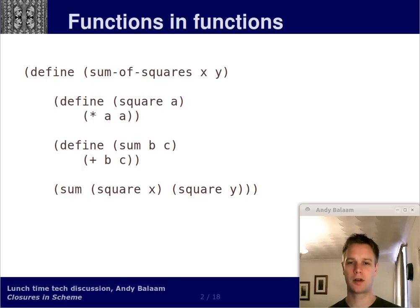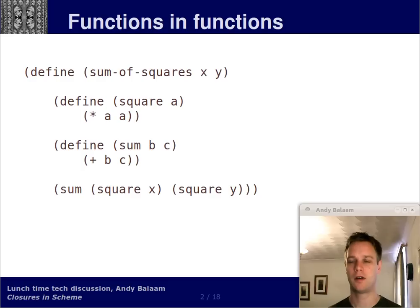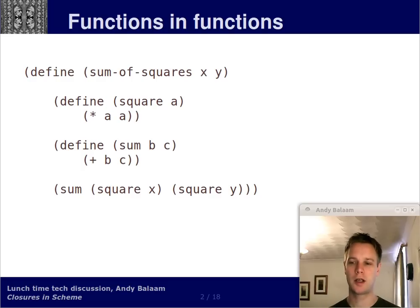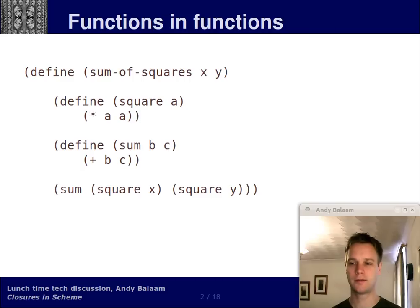Let's begin by looking at this function. This is called sum-of-squares. The top line — define sum-of-squares x y — means I'm defining a function. Its name is sum-of-squares and it takes in two arguments, x and y. Immediately below that, you've got another definition — a function defined inside the other function. You can only see it when you're working inside this function. That function is called square, it takes in an argument called a, and the body of that function is just star a a, which means return the value of a times a.